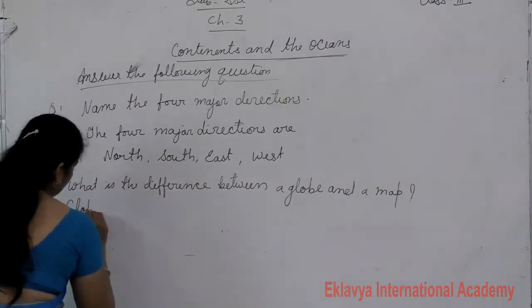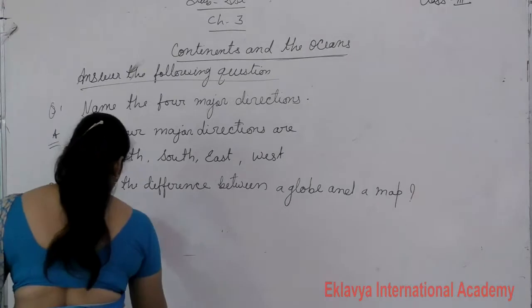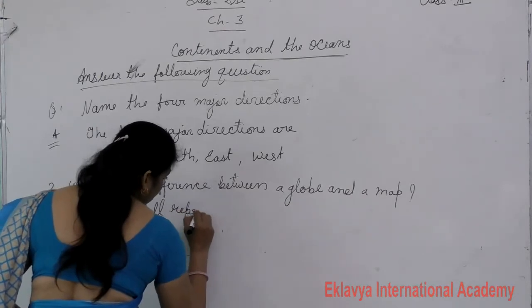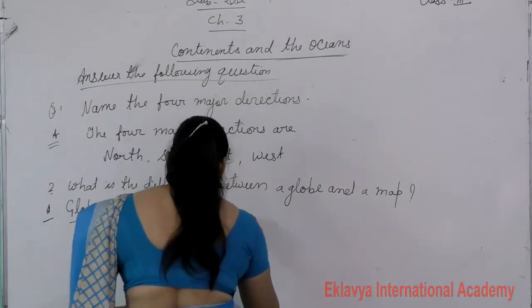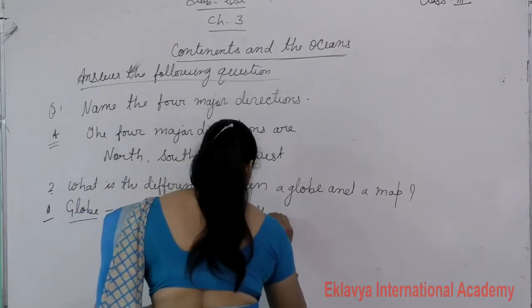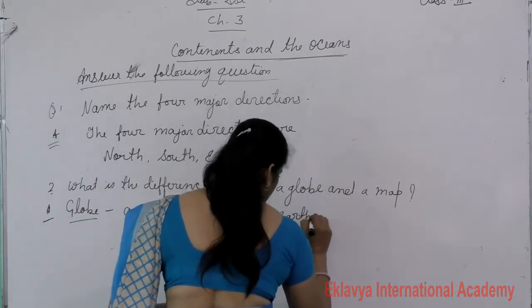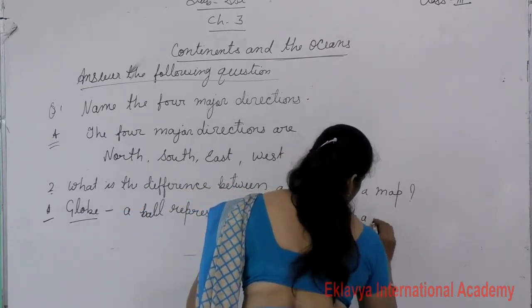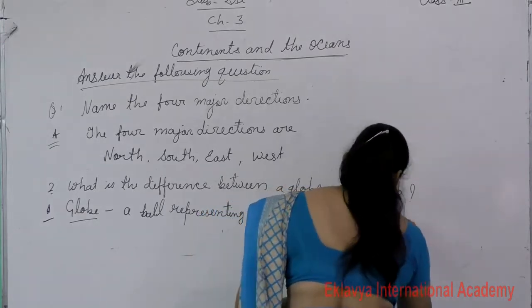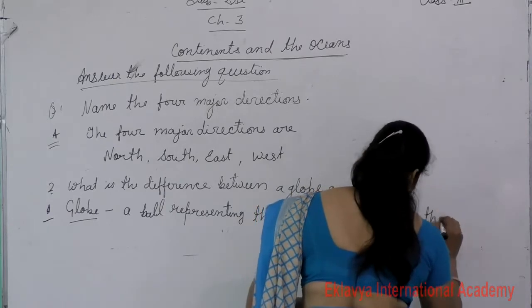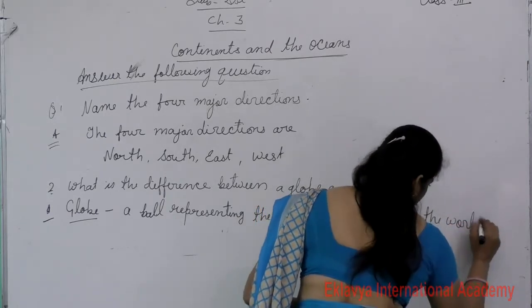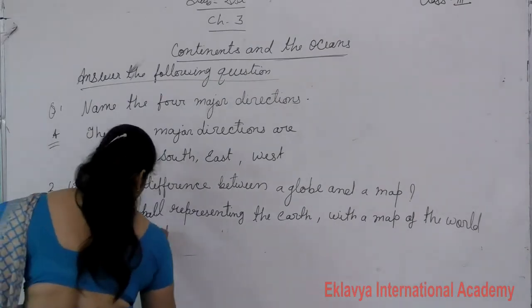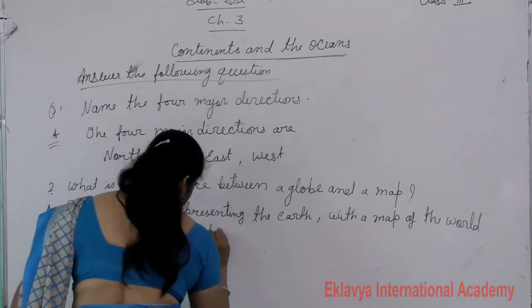First is Globe. A globe is a ball-shaped object representing the earth with a map of the world painted on it.